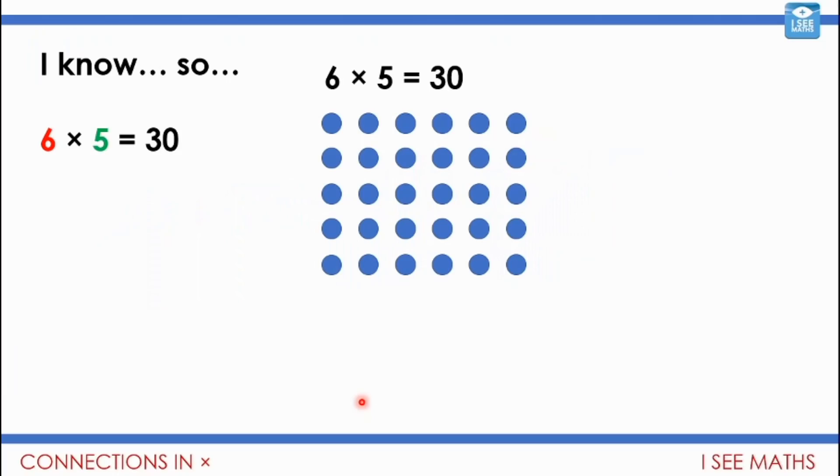So let's have a look at I know so. So using one fact that we know to derive, to work out another one. Six times five equals thirty. So there I have six five times. Or, I guess you could look at this in terms of I've got five and how many lots of five? Well, I've got six lots of five. Six times five equals thirty. Thirty dots in total.